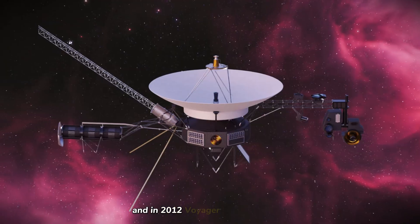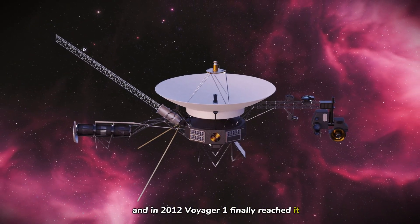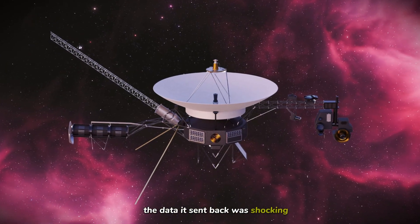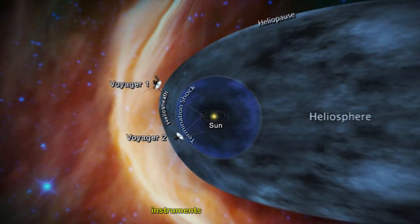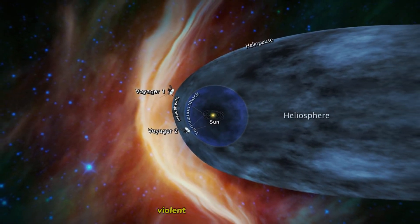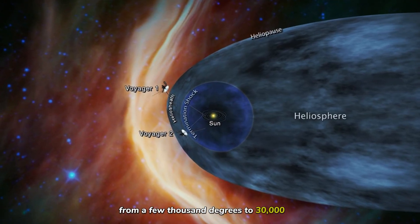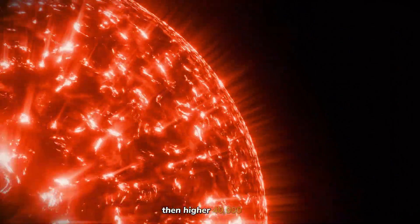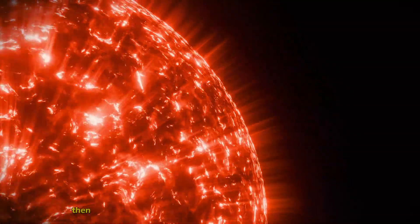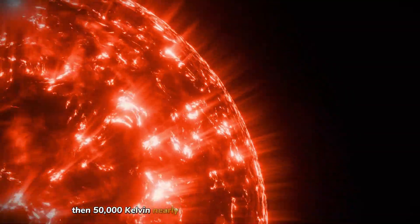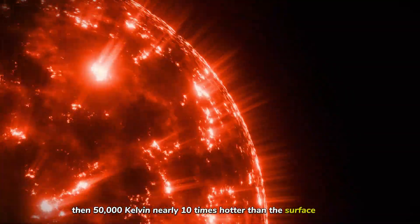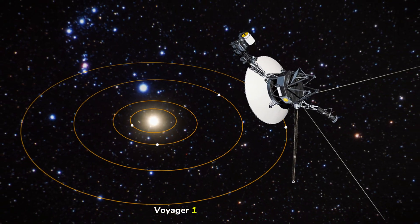And in 2012, Voyager 1 finally reached it. The data it sent back was shocking. As it crossed the boundary, instruments detected a sudden, violent spike in temperature. From a few thousand degrees to 30,000 Kelvin. Then higher, 40,000 Kelvin. Then 50,000 Kelvin, nearly 10 times hotter than the surface of the sun. Voyager 1 had found the wall.